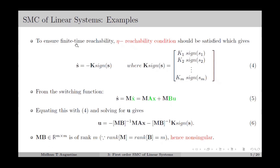To ensure finite time reachability, the eta reachability condition should be satisfied, and we require S-dot equal to minus k times signum of S. Here k times signum of S has m elements corresponding to each control input, and based on the sign of each switching variable, the control will switch. So k is a vector containing the switching gains and S is a vector containing the sliding variables. From the switching function, S-dot equals M times x-dot, in which we substitute the state equation and equate with the desired S-dot from the eta reachability condition. Solving for u gives u equal to minus (MB)⁻¹ MA x minus (MB)⁻¹ k signum(S).